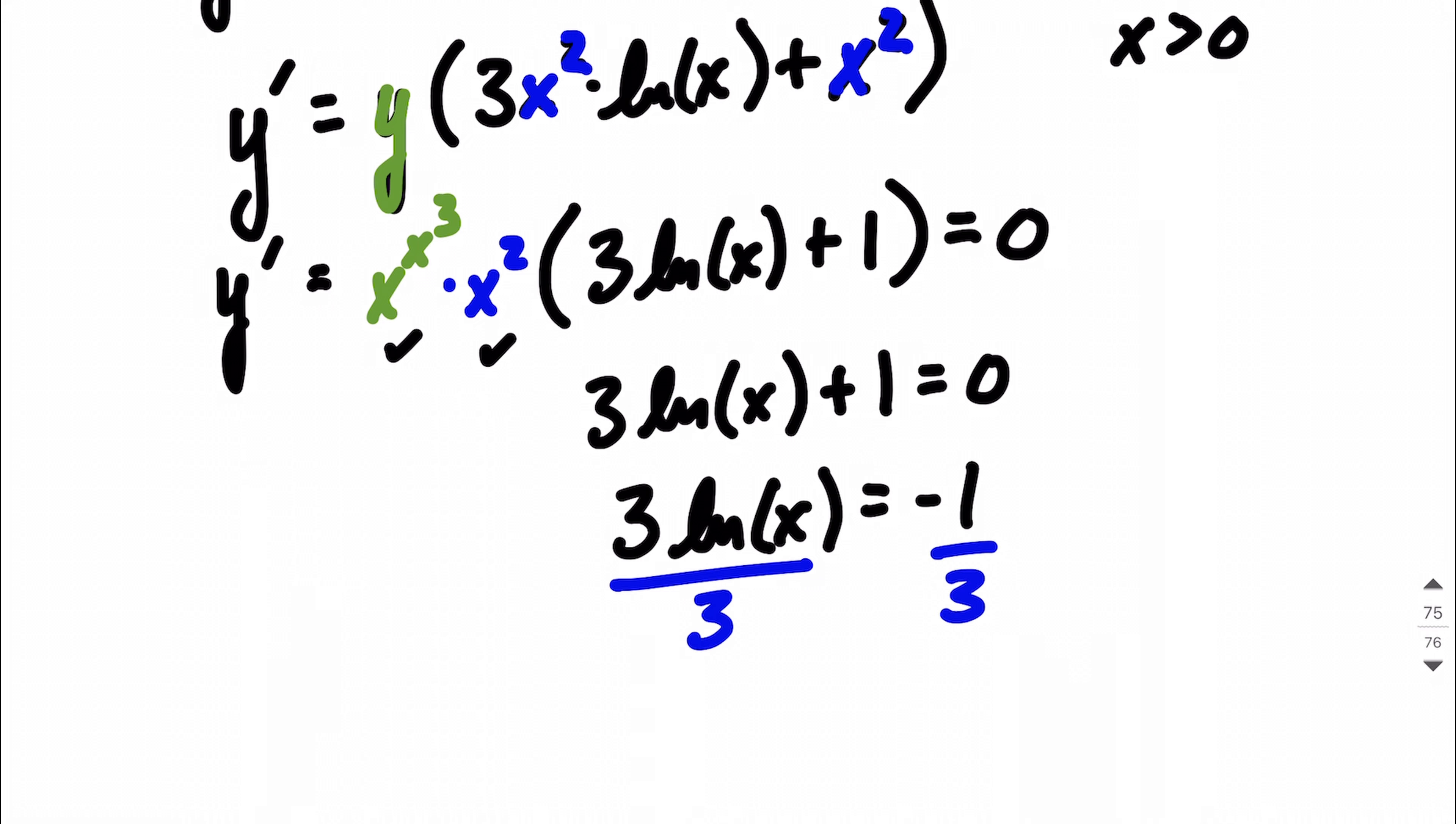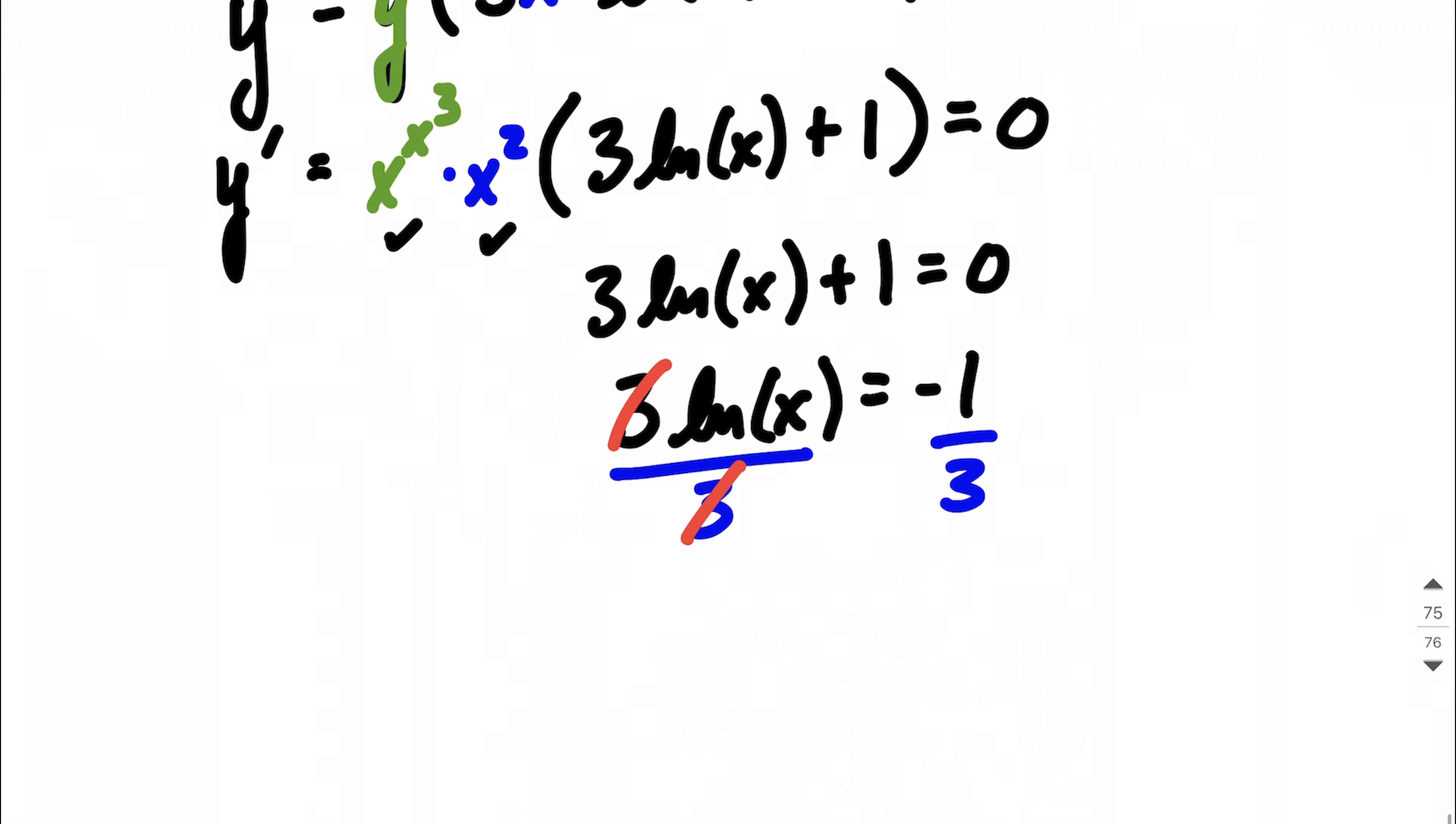The purpose being kind of isolating that natural log of x, trying to solve for it. So now we get to the point where we have natural log of x equals negative 1 third.